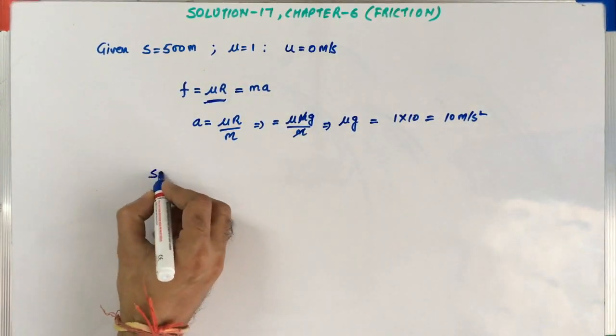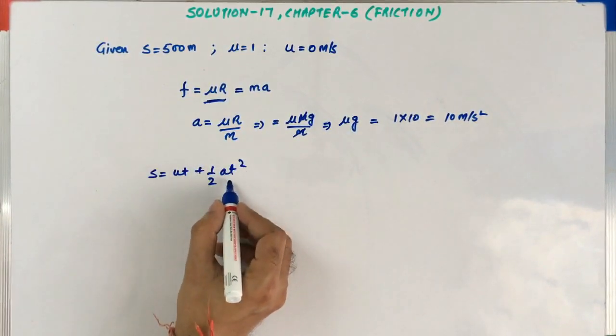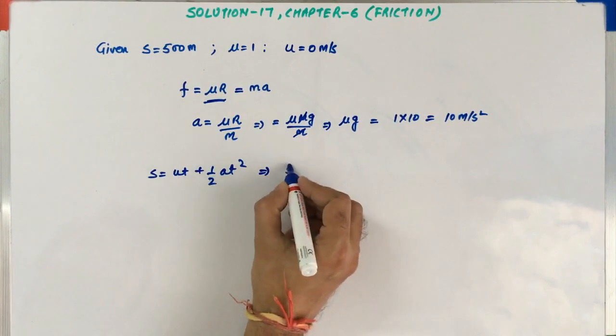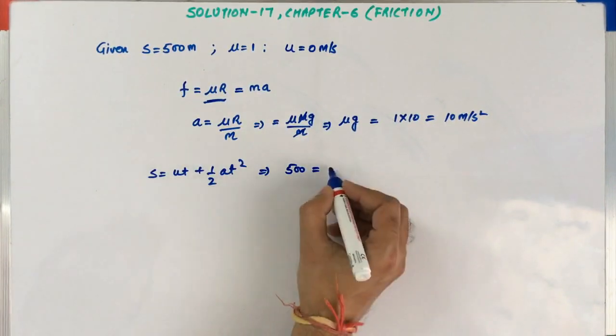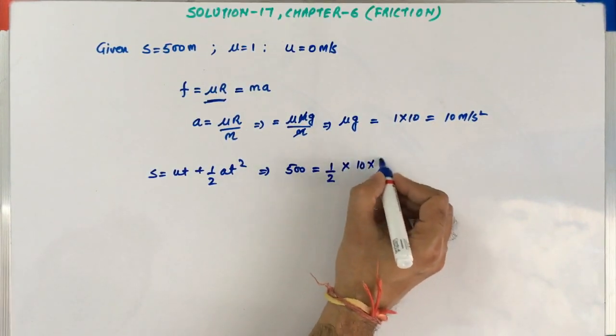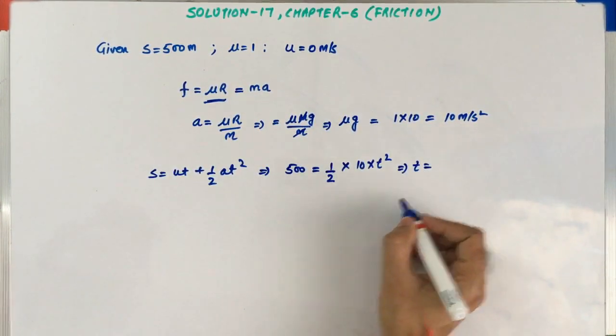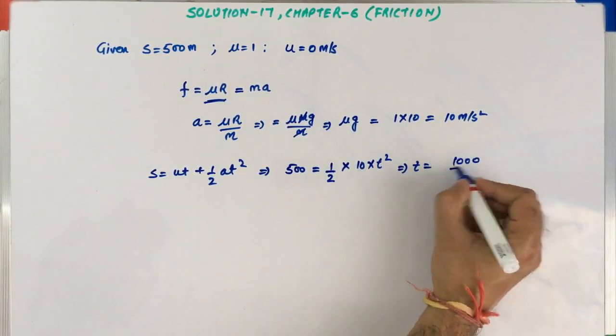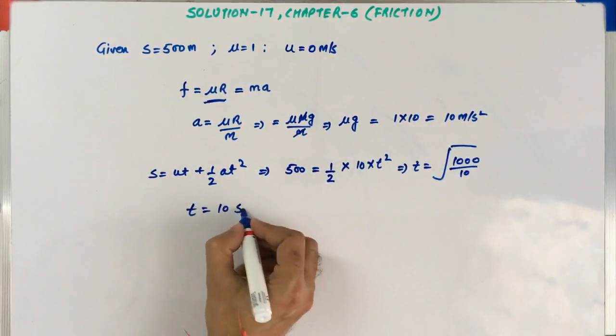Now using s = ut + ½at², I can get the time. The distance to be covered is 500 meters. Initial velocity was 0, so this component is 0. 500 = ½ × 10 × t². So t will become √(1000/10), which equals 10 seconds.